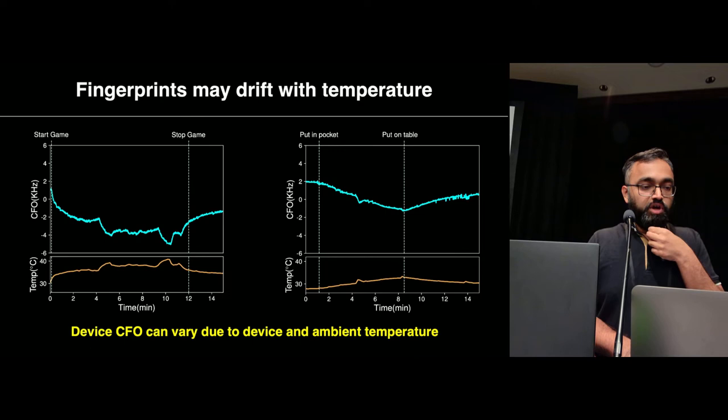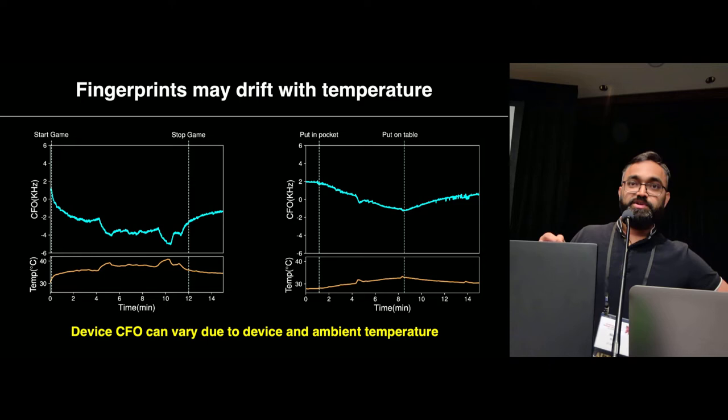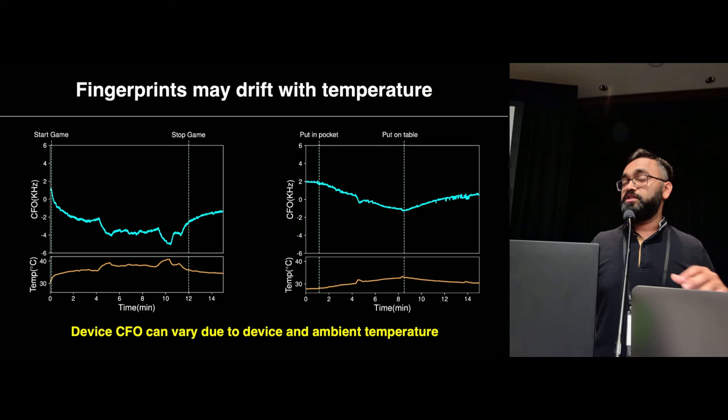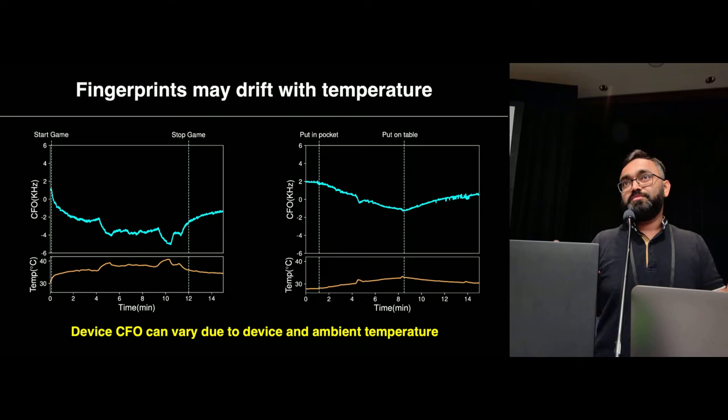The second problem an attacker may face is that carrier frequency offset depends on the crystal, and it drifts with temperature. As phone activity increases — for example, a game is being played — the frequency offset may change. It also changes with ambient temperature. For example, putting the phone in your pocket on a hot day can cause variation. This is a challenge an attacker would probably face, though in common conditions like a phone in your pocket or hand, this was manageable.